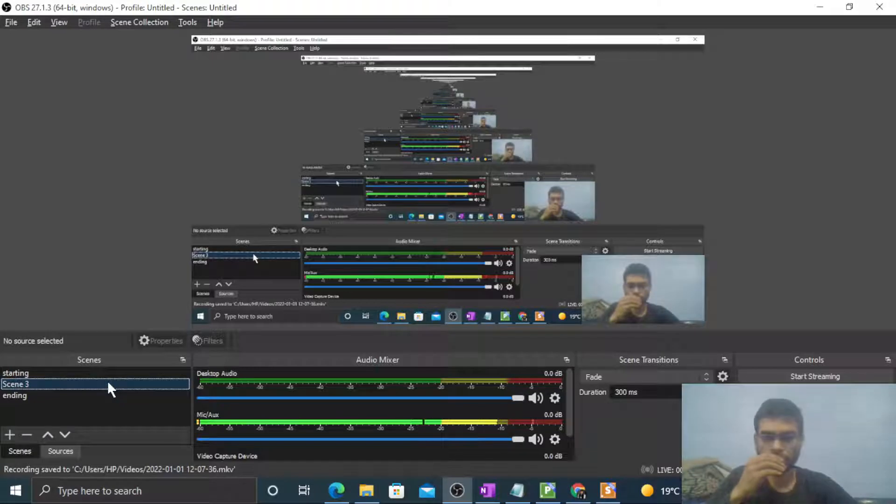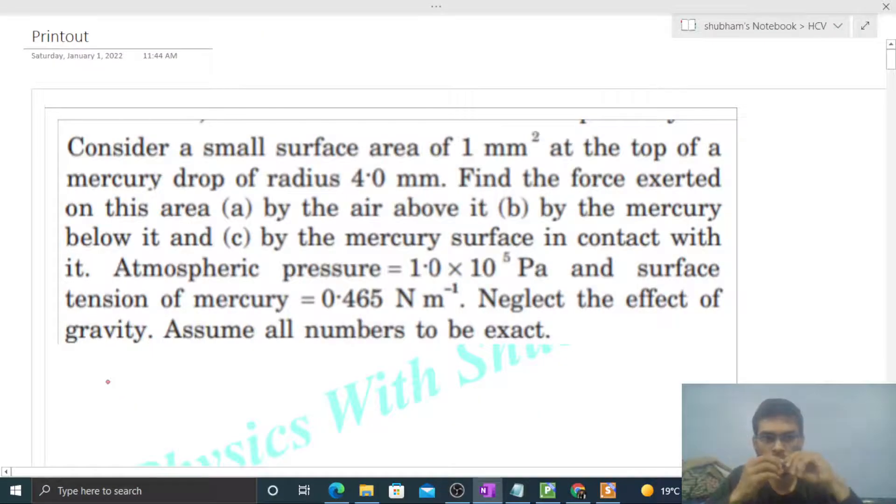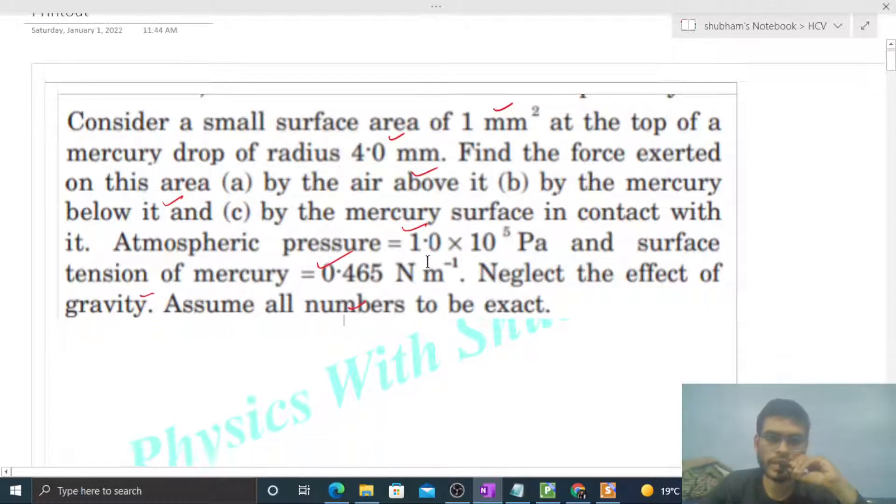Okay, hi everyone. Today let's discuss one interesting problem. Consider a small surface area of 1 mm² at the top of a mercury drop of radius 4 mm. Find the force exerted on this area by the air above it, by the mercury below it, and by the mercury surface in contact with it. Atmospheric pressure is given, surface tension of mercury is given. Neglect the effect of gravity. Assume all numbers to be exact.